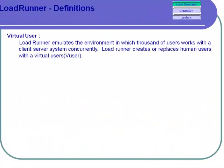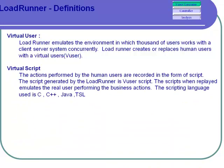Virtual User: LoadRunner emulates the environment in which thousands of users work with a client-server system concurrently. LoadRunner creates or replaces human users with a virtual user, also known as the V User. Virtual Script: the actions performed by the human users are recorded in the form of a script. The script generated by LoadRunner is the V User script, and when replayed, it emulates the real user performing the business actions.